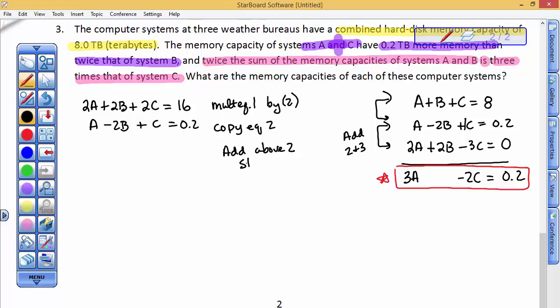I'll put statements here. So add these two. 2A and 1A is 3A. The B's cancel out. 2C and 1C is 3C. And 16 plus 0.2 is 16.2. And now I have a second red equation with A's and C's. I'm just looking at my notes to be sure this is what I got. I believe so.